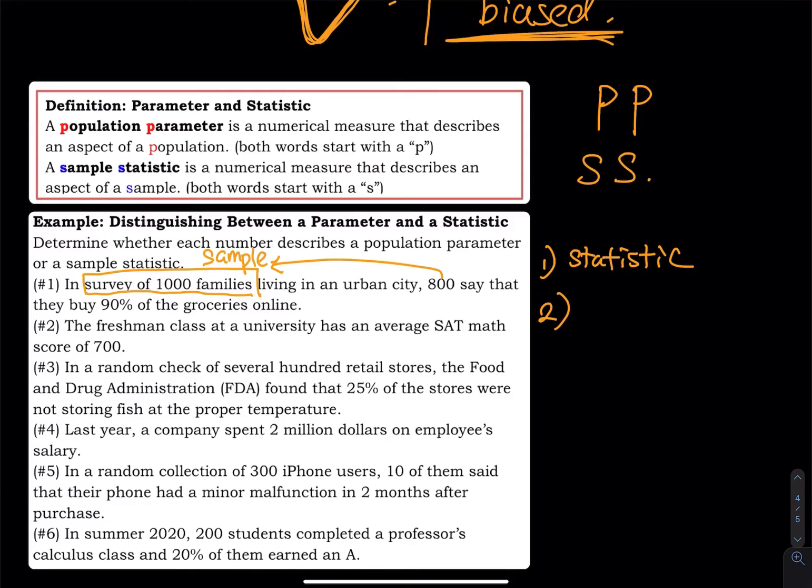Number two, the freshman class at a university has an average SAT math score of 700. So that is the average of everybody, every single freshman in that university. So since that is the average of everybody, then that is a parameter. Because the 700 describes a characteristic of the population. Number three, in a random check of several hundred retail stores, this is a random check. Random check means we have a sample. Whatever number followed by that must be a statistic. So number three is a statistic. 25% of the stores were not storing fish at the proper temperature. So this 25% describes the sample. It's a characteristic of the sample. That's why it is a statistic.